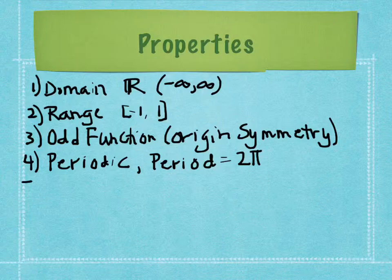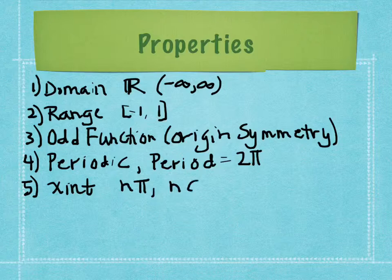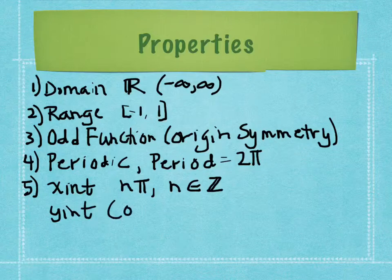The x-intercepts occur at every whole π value, expressed as nπ where n is an integer (n ∈ ℤ). The symbol ∈ means 'is an element of,' so any integer multiple of π gives an x-intercept — positive and negative. The y-intercept is at the origin (0, 0); there's only one, of course, otherwise it wouldn't be a function.